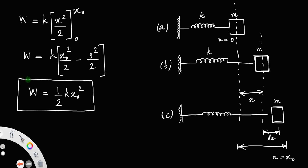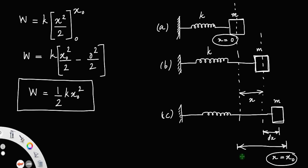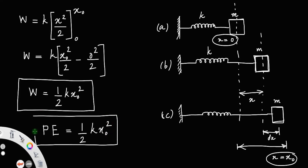So the work done to stretch the spring through a distance x₀ is equal to one-half k x₀ squared. The spring is given a strain — that is, we are extending the spring from its mean position x equals 0 to a new position x equals x₀. The energy possessed by a body due to its strain is called potential energy. Therefore, this work done is the potential energy of the stretched spring, which equals one-half k x₀ squared, where x₀ is the distance through which it is extended.